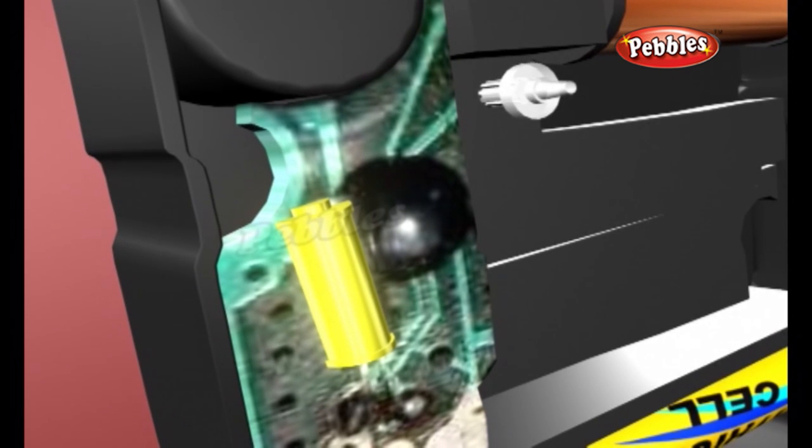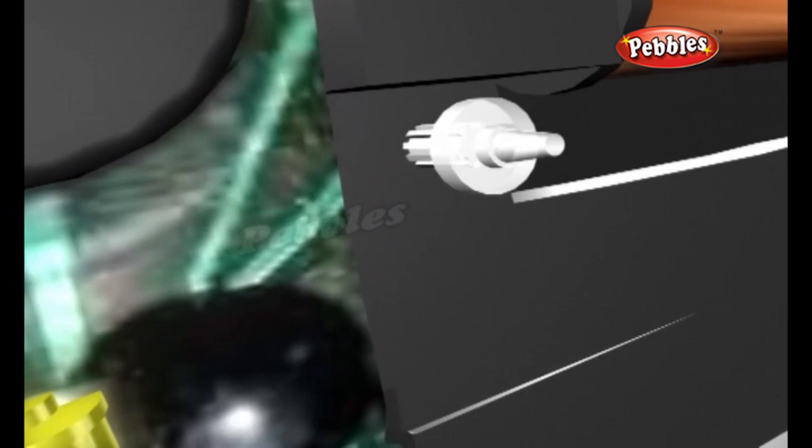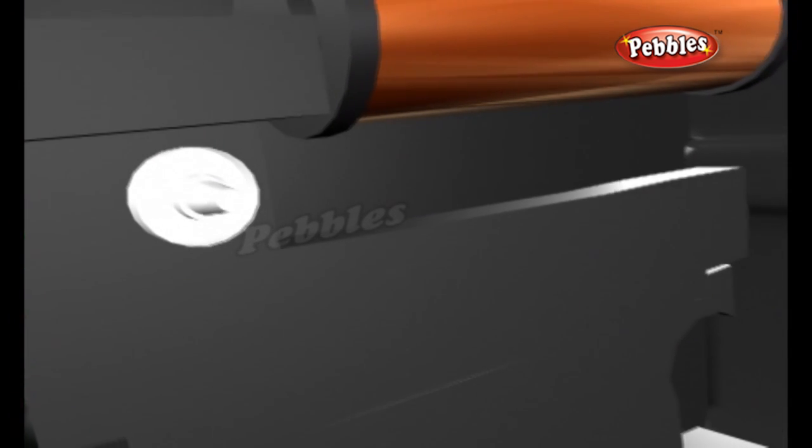Inside a quartz clock or watch, the battery sends electricity to the quartz crystal through an electronic circuit. The quartz crystal vibrates back and forth at a precise frequency, exactly 32,768 times each second.